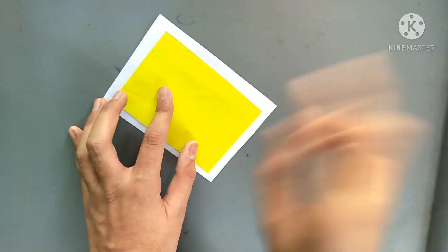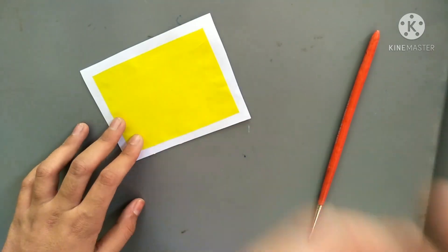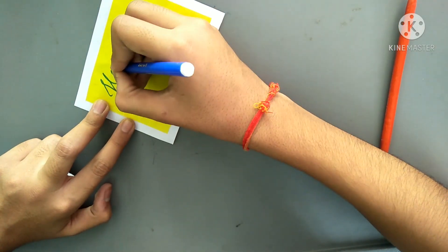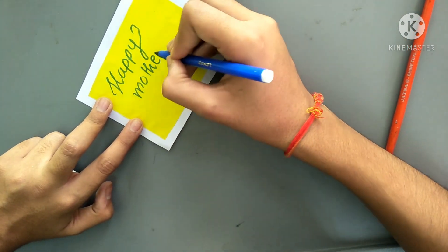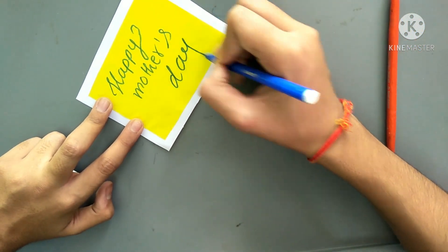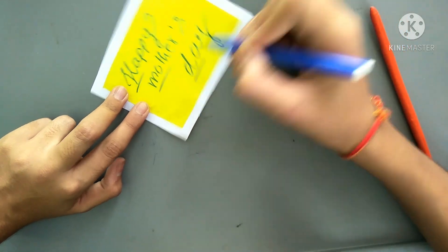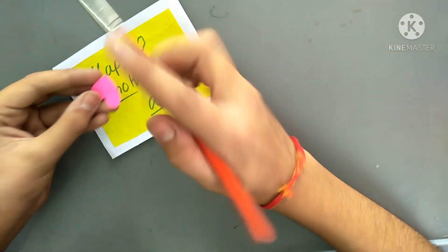Take a white and a yellow sheet of paper and paste both of them. Now write Happy Mother's Day on it like I am doing. Just do like this.